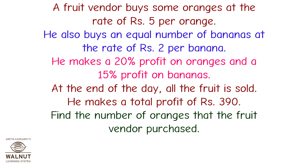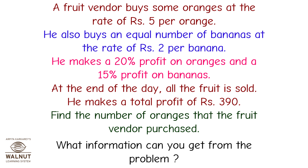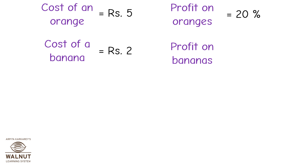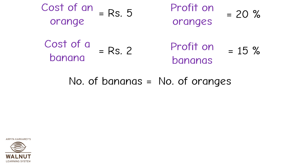A fruit vendor buys some oranges at rupees 5 per orange and an equal number of bananas at rupees 2 per banana. He makes a 20% profit on oranges and a 15% profit on bananas. At the end of the day all the fruit is sold and he makes a total profit of rupees 390. Find the number of oranges purchased. The number of bananas equals the number of oranges, and the total profit equals rupees 390.